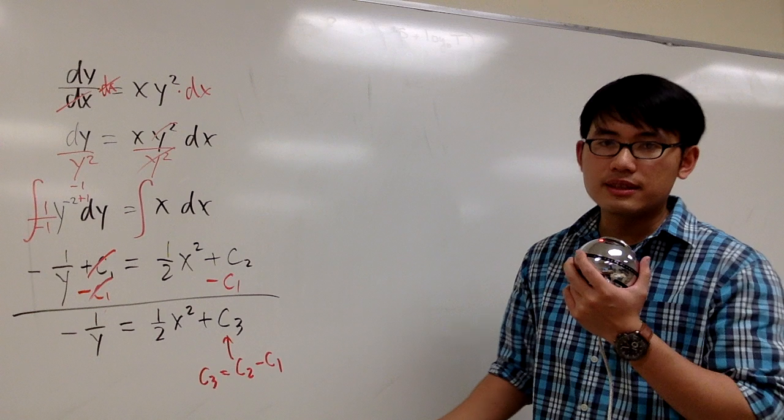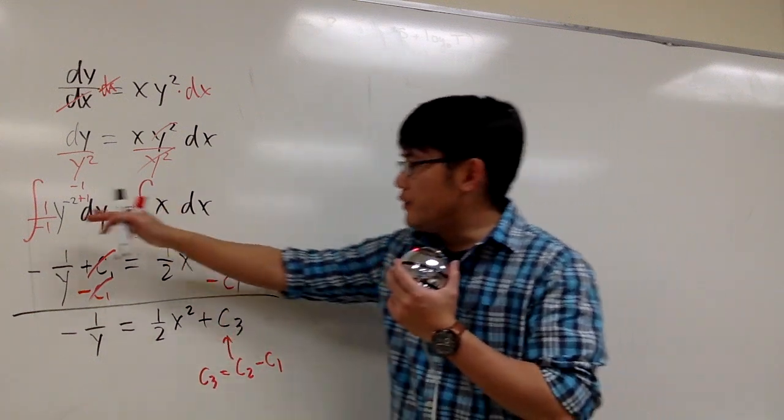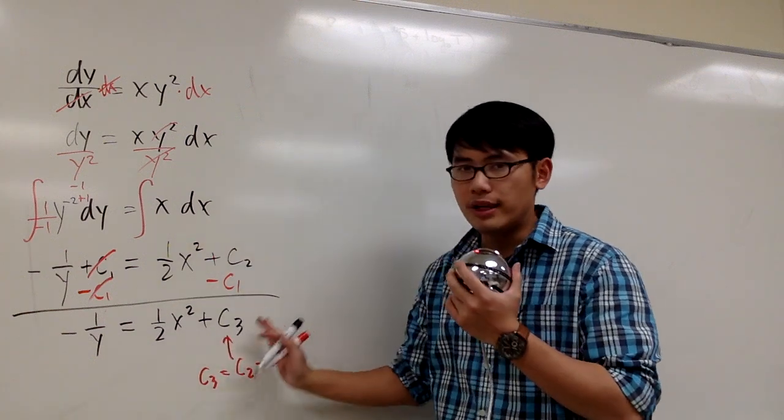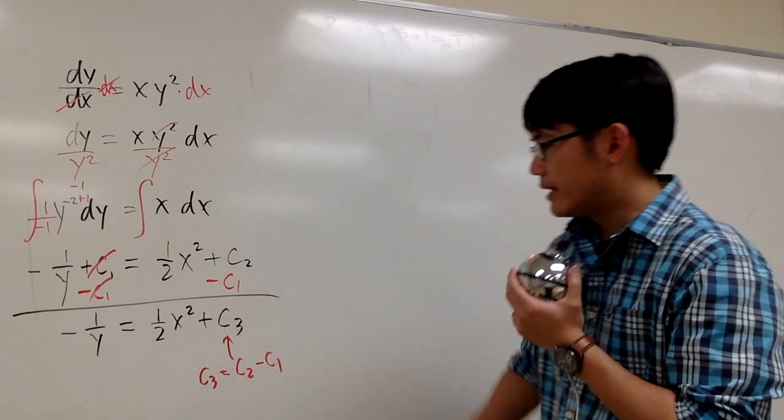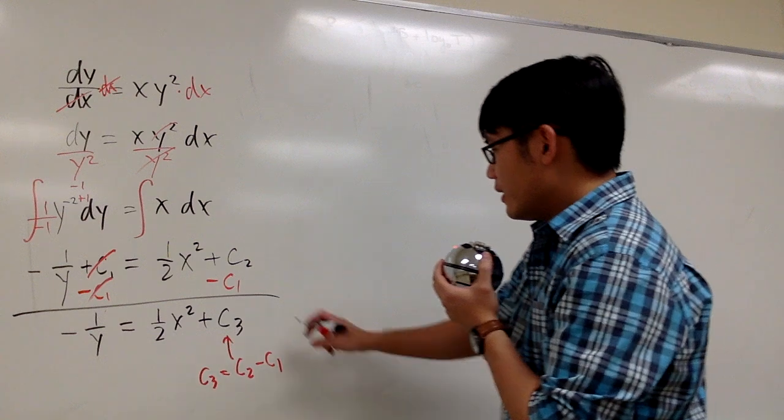And then later on, you can skip this step as well. Meaning, if you need to integrate both sides, all we need to do is put a constant on the right-hand side only. Because this will always happen. But then for the first question that we're doing, let me just show you all the details.